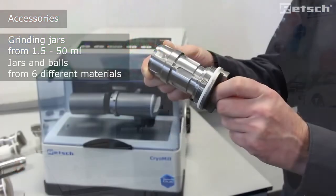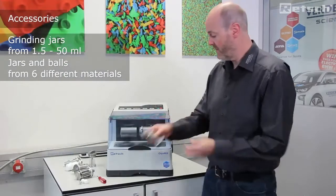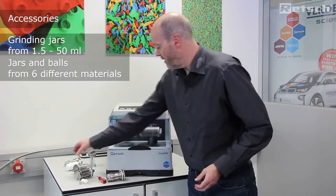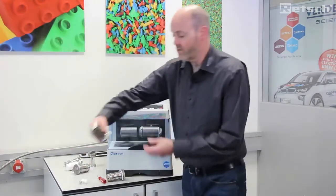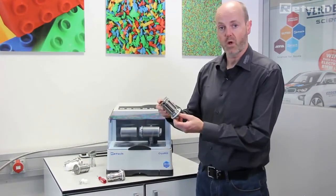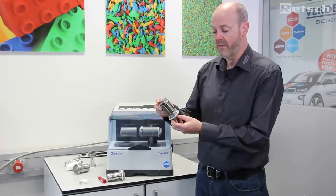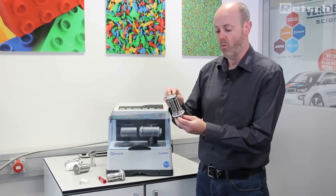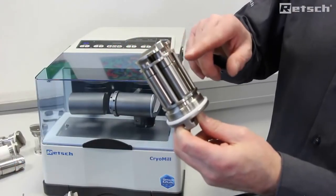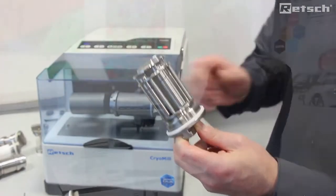The largest size, as we show here, is the 50 milliliter, and we go down to grinding jars as small as 5 milliliters. And in this instance we have an adapter whereby we can run either two or four samples of this size simultaneously to facilitate a much larger throughput rate.